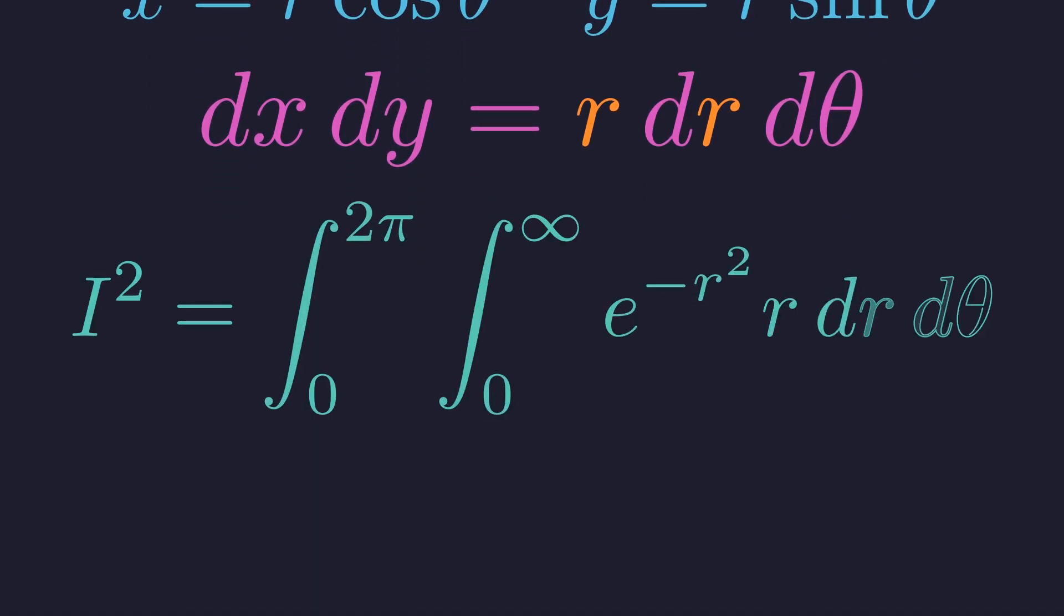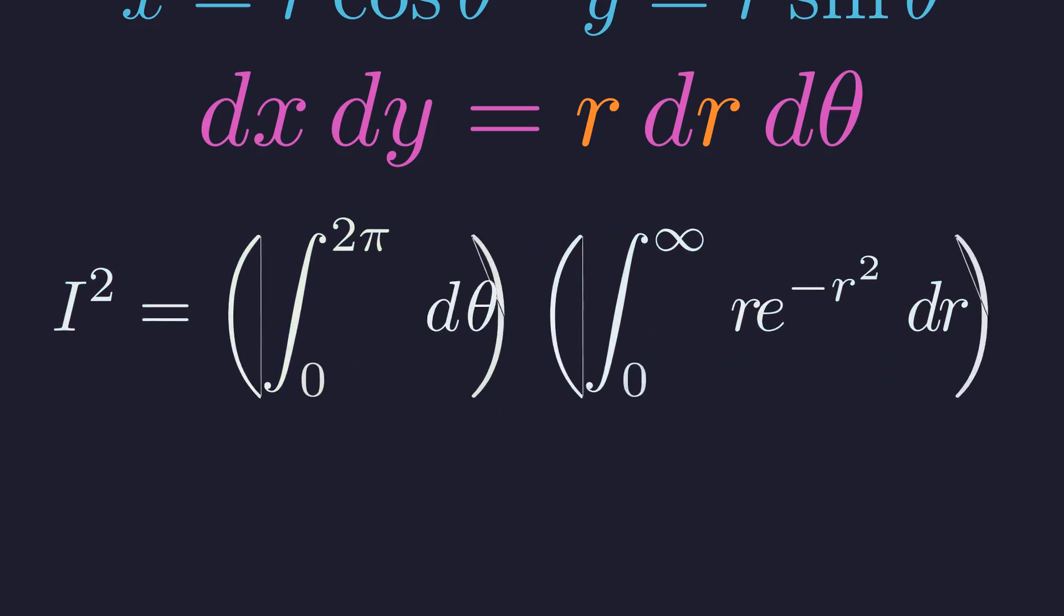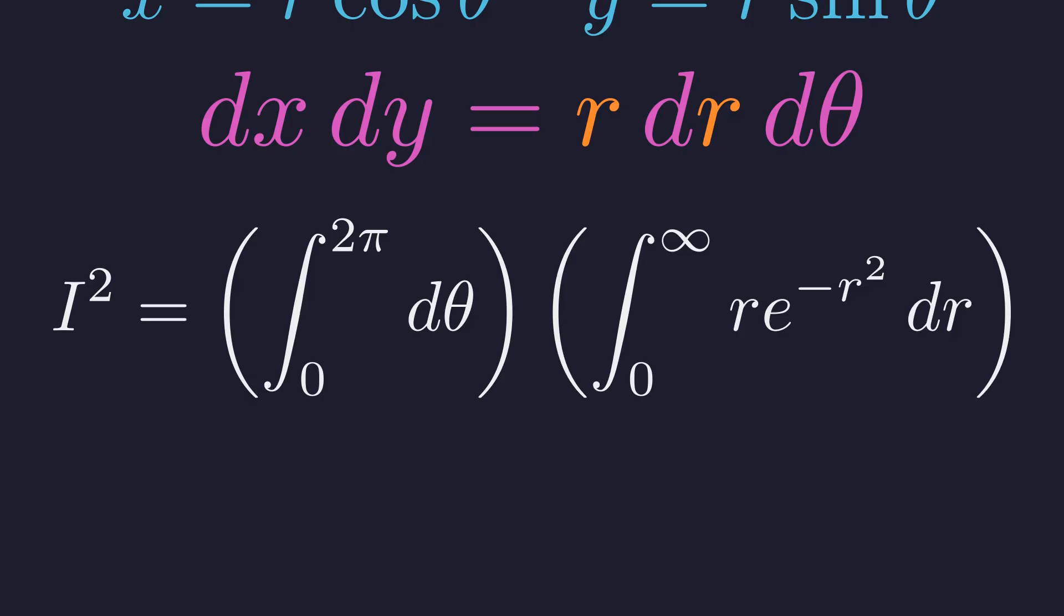The integral now has theta going from 0 to 2 pi, covering all angles, and r going from 0 to infinity. The nice thing is that this separates into two independent integrals. We can split this into the theta integral times the r integral.